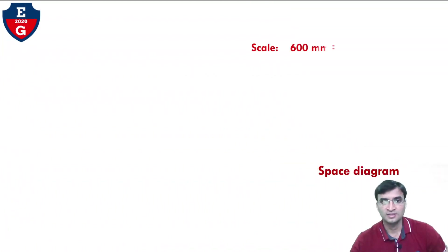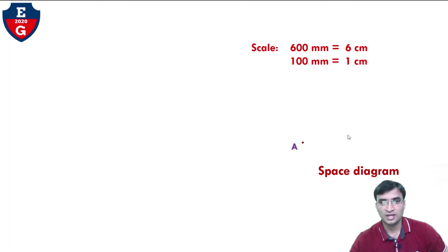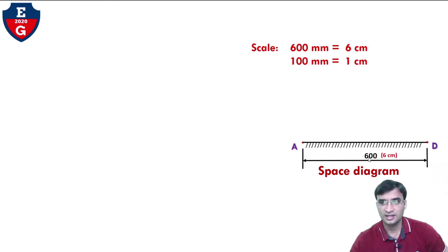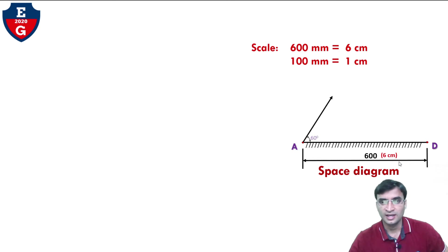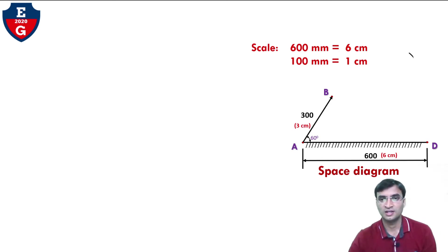First, draw the space diagram. Assume the scale: 600 mm equals 6 cm, so 1 cm equals 100 mm. Take one random point and draw link AD; the length is given as 600 mm, so as per our scale, draw line AD equal to 6 cm. The angle is given as 60 degrees and the length of AB equals 300 mm, so as per our scale, the length of this link is 3 cm.